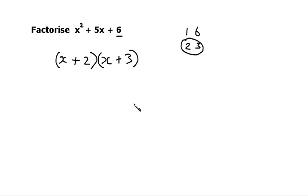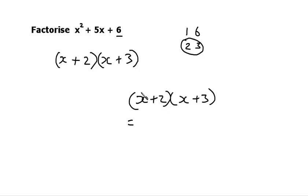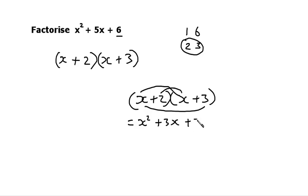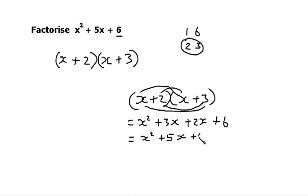We can check that that's right by multiplying it out. So we had x plus 2 multiplied by x plus 3. Using FOIL: first, x times x is x squared. Outside, x times 3 is 3x. Inside, 2 times x is 2x. And last, 2 times 3 is 6. Simplifying that, we get x squared, 3x plus 2x is 5x, and then plus 6 — which is what we started with. So we factorised that correctly.